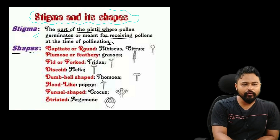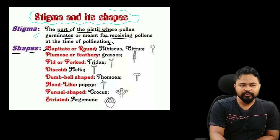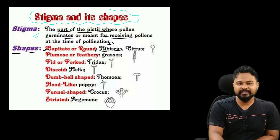Regarding shapes — what do you want to know? First: capitate or round. Example: Hibiscus, Citrus — the stigma is round.